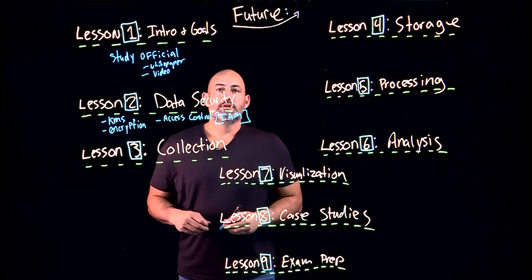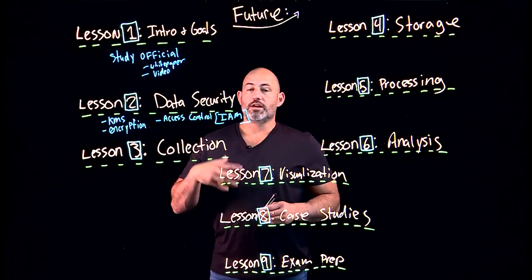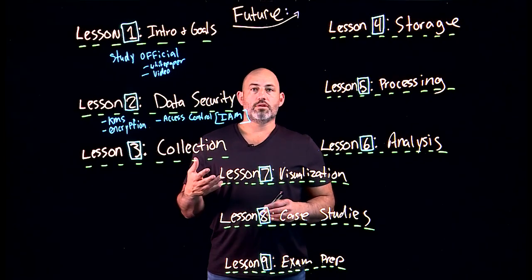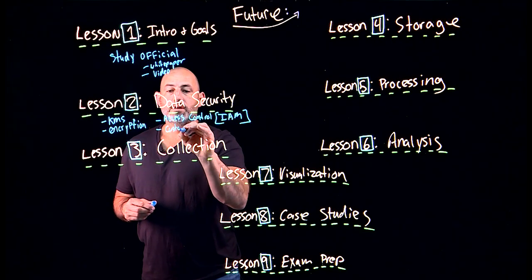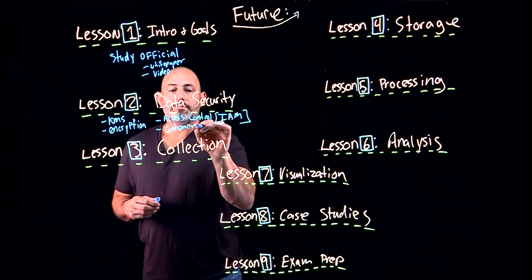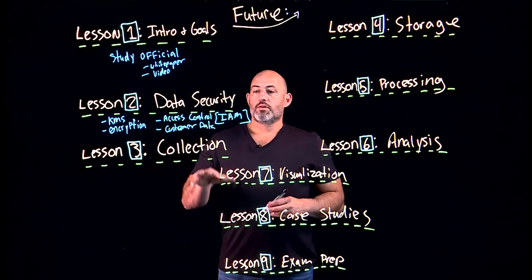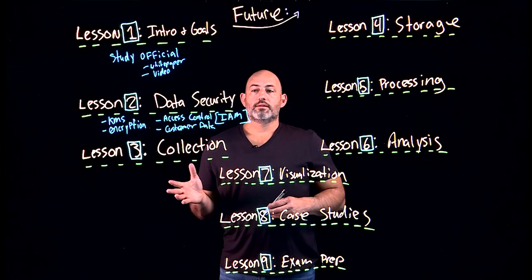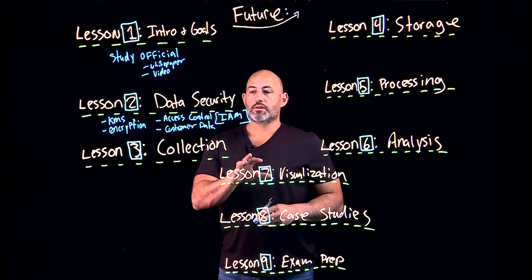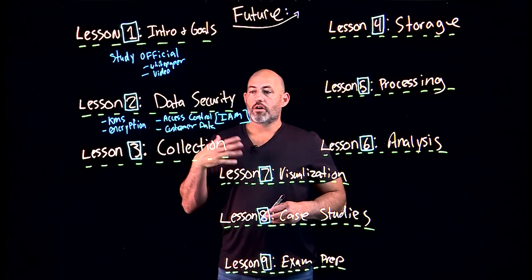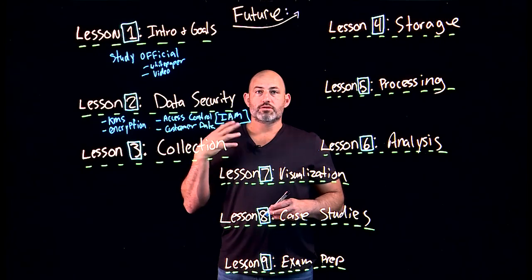In the IAM system, we have the concept of machines that have access to things, users that have access to things, and individuals that have access to things in groups. Those different categories of access control are really important. Another aspect of data security is not storing confidential customer data such as credit card numbers, social security numbers, or any personally identifiable information, as storing such data may violate federal law, state law, European regulations, or medical profession requirements.